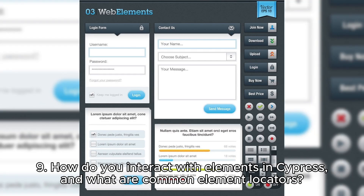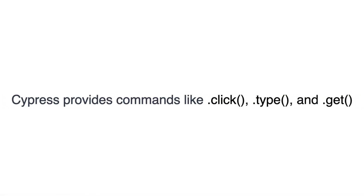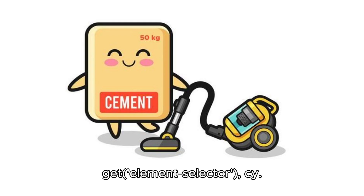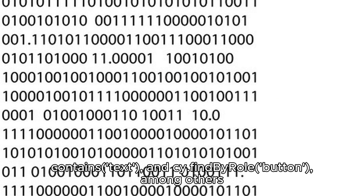Question 9: How do you interact with elements in Cypress and what are common element locators? Cypress provides commands like .click(), .type(), and .get() to interact with elements. Common locators include cy.get(elementSelector), cy.contains(text), and cy.findByRole('button'), among others.